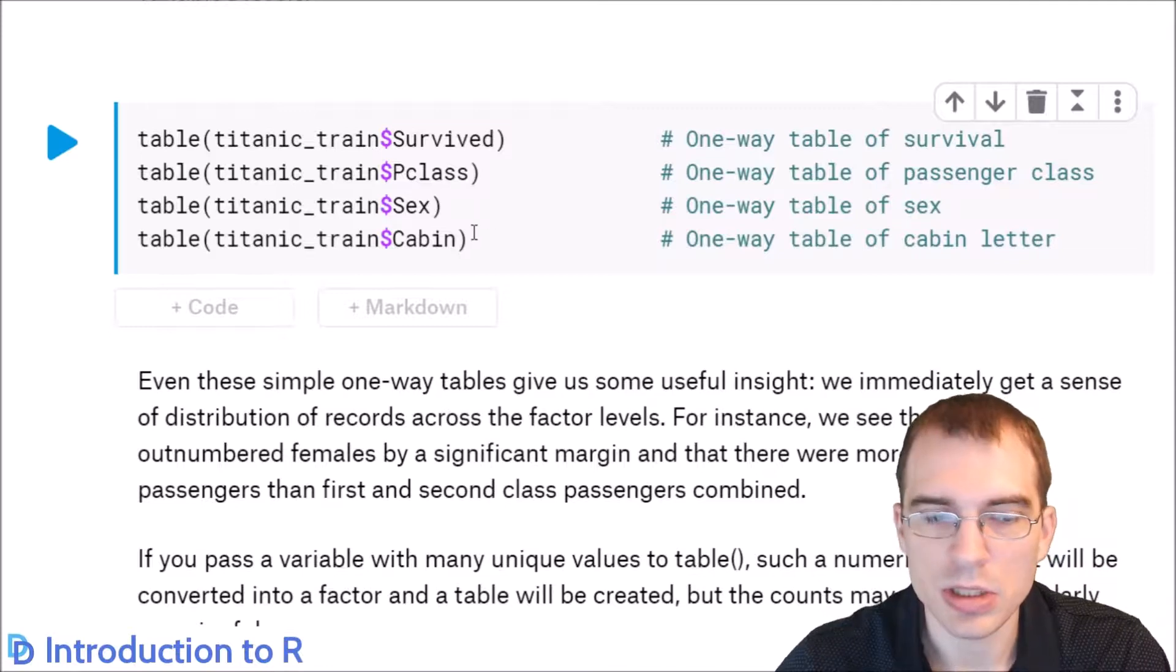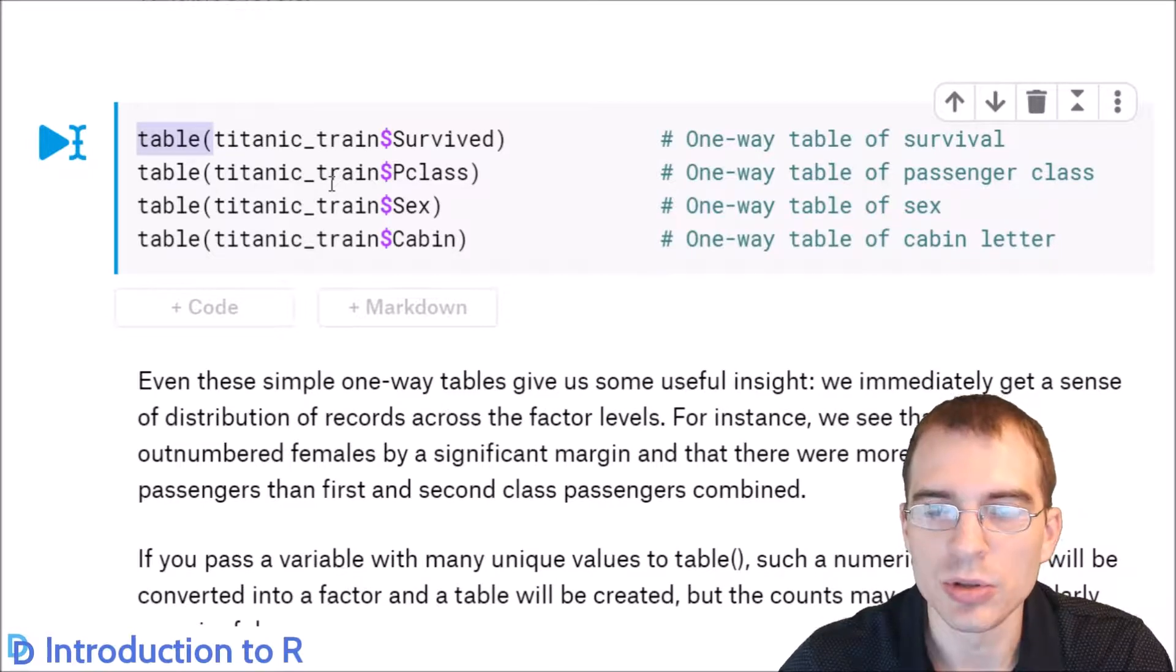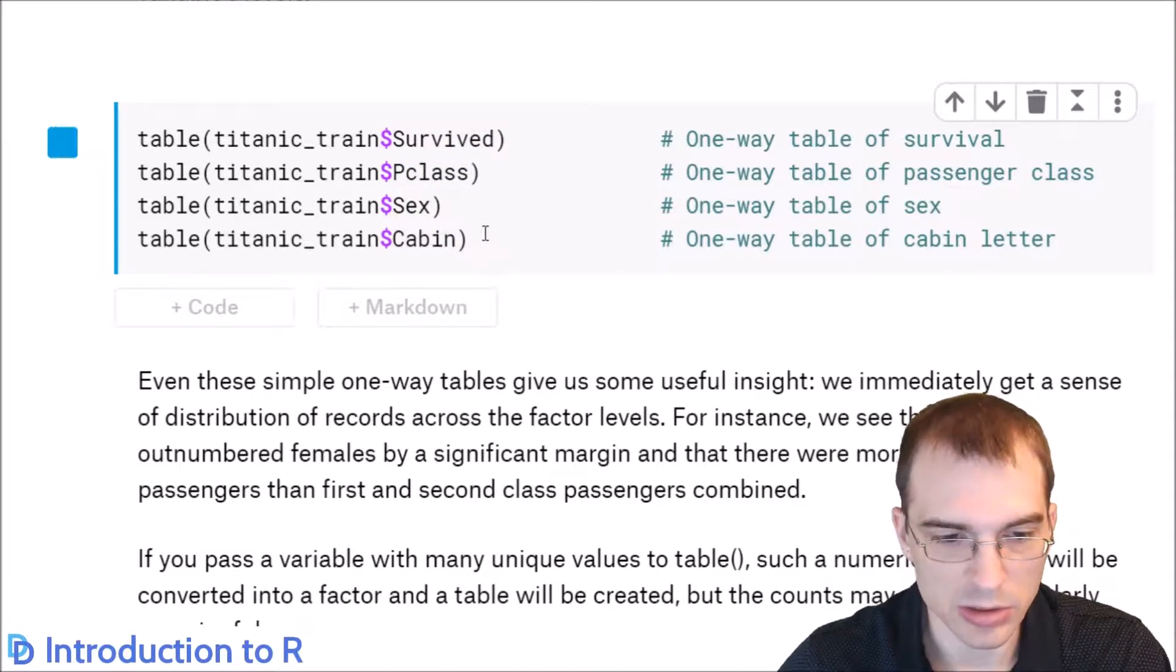So in R, you can just call this function table and pass in a categorical variable that you want to create a frequency table for. We're going to look at a few different variables and see what the tables look like. We're going to look at the survived variable, the passenger class, the passenger sex, and the cabin, and just see what the table output looks like.